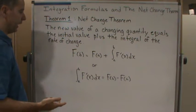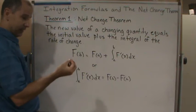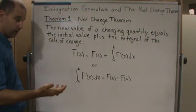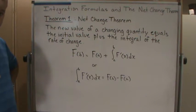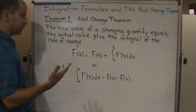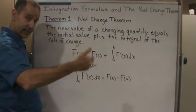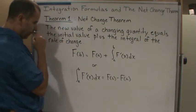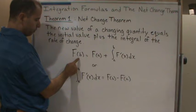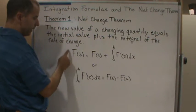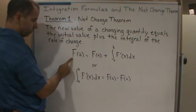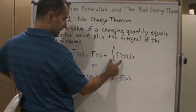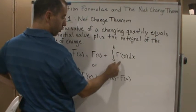then you can find the net change in, say, distance. If velocity is the changing quantity, you can find the final distance traveled by taking the initial distance plus the integral of the change in distance.